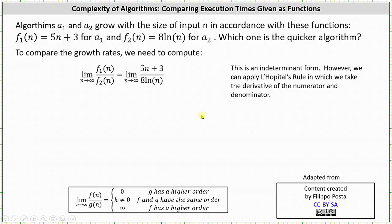Now let's look at a second example. Algorithms A sub one and A sub two grow with the size of input n in accordance with these functions: f sub one of n equals 5n plus 3 for A sub one, and f sub two of n equals 8 natural log n for A sub two. Which one is the quicker algorithm? To compare the growth rates we compute the limit as n approaches infinity of f sub one of n divided by f sub two of n. Notice that as n approaches infinity, both the numerator and denominator approach infinity — an indeterminate form. This does not mean the limit doesn't exist. We can apply L'Hôpital's rule, taking the derivative of the numerator and denominator to help determine the limit.